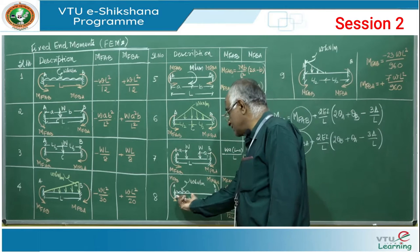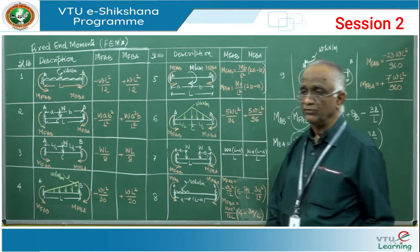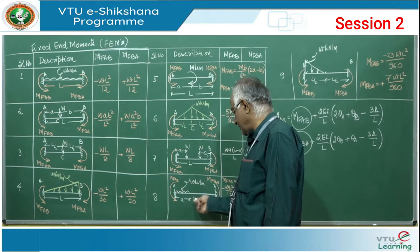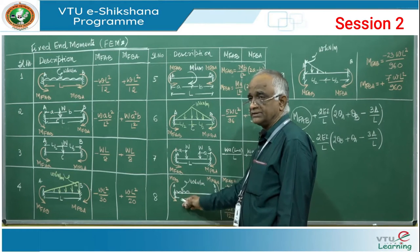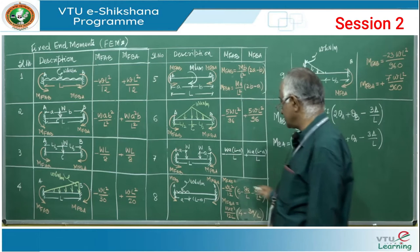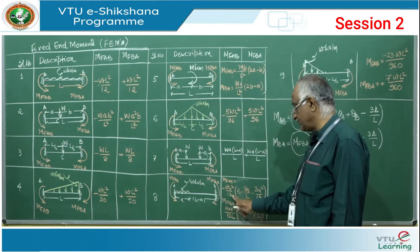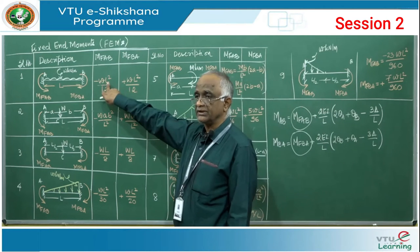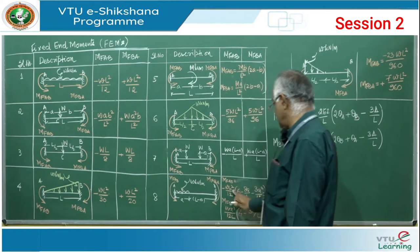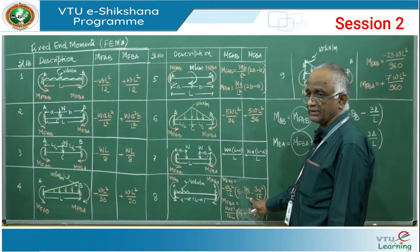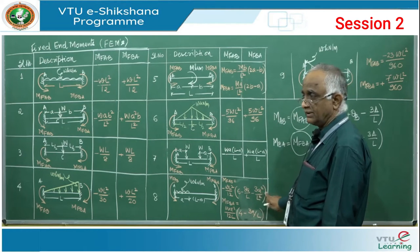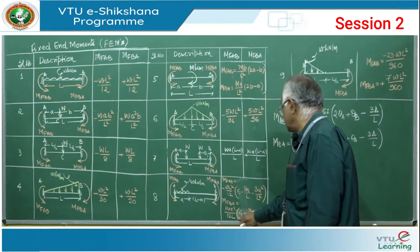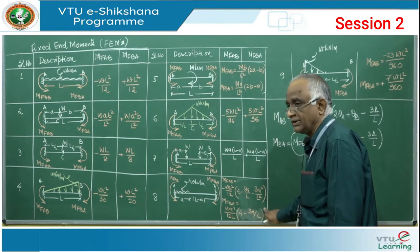For a partial UDL acting from the left support over a length A (remaining span is L − A): M_FAB equals minus WL²/12 × (6 − 8A/L + 3A²/L²), and M_FBA equals WL³/12L × (4 − 3A/L).